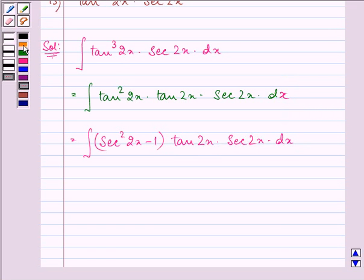Further, we have to let t be equal to secant 2x.